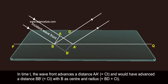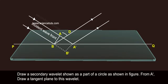With B as center and radius equals to BD equals to CT, draw a secondary wavelet shown as a part of a circle as shown in figure. From AD, draw a tangent plane to this wavelet.